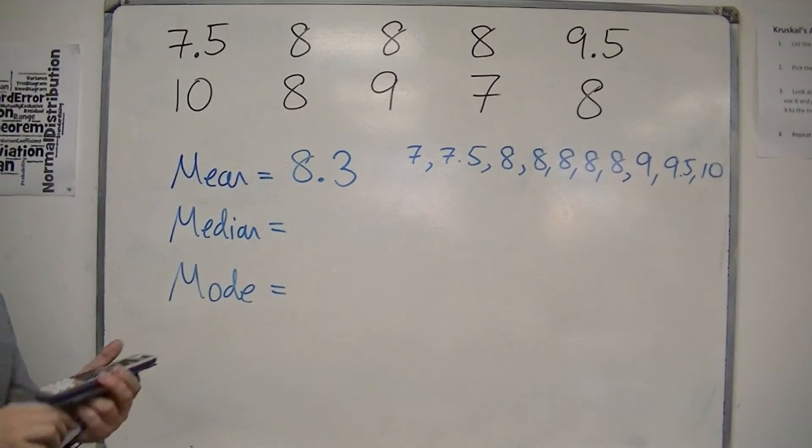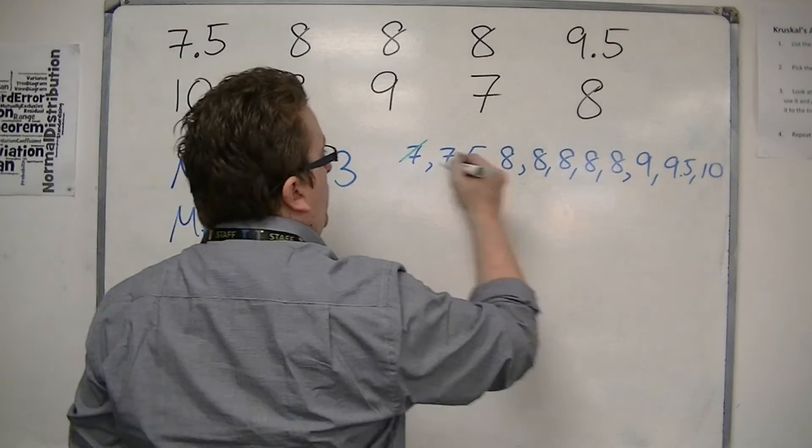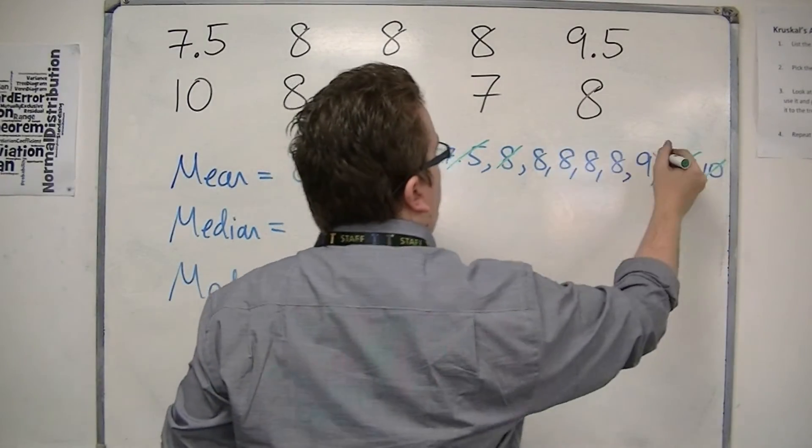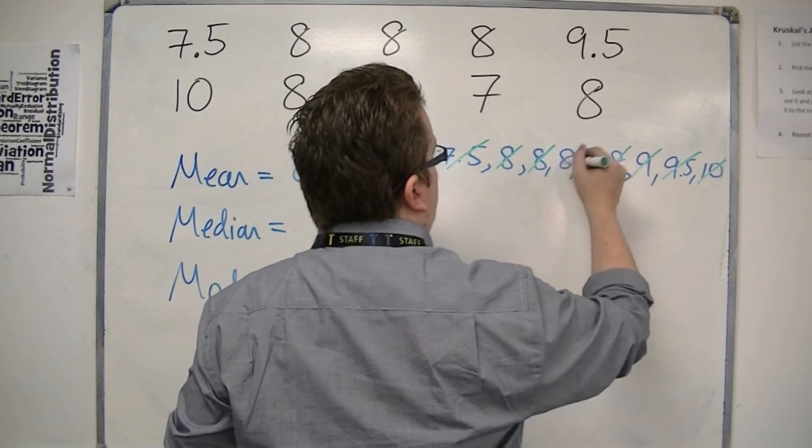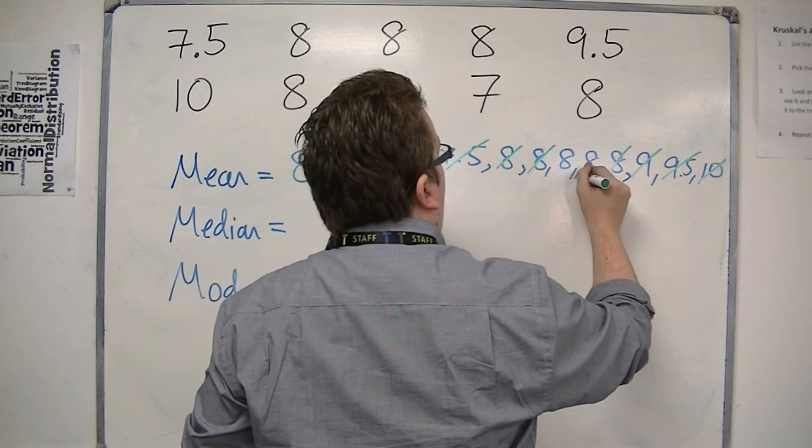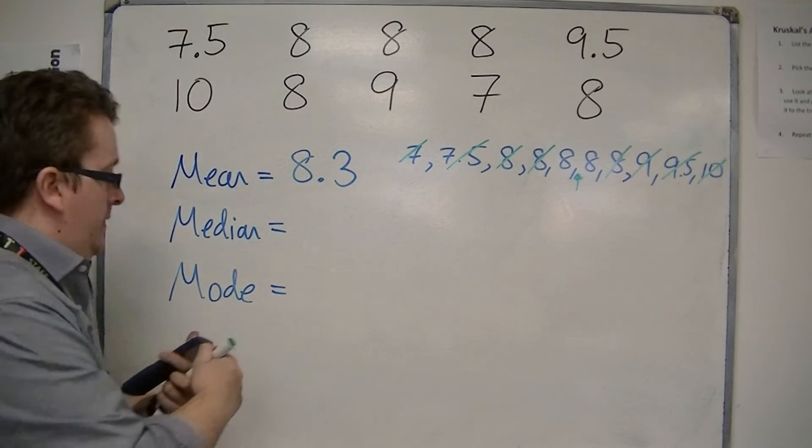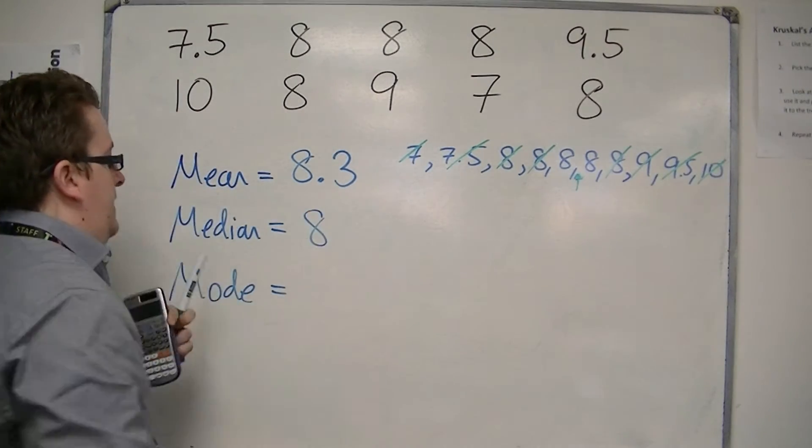So I've made sure I've counted them all. So then we cross off the smallest and the largest. Smallest, largest, smallest, largest, smallest, largest. And then we're looking at halfway between 8 and 8 which is just 8. So the median is 8.